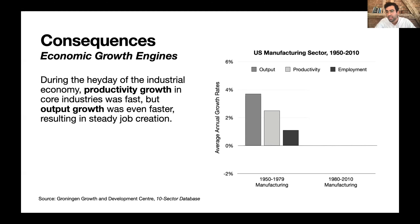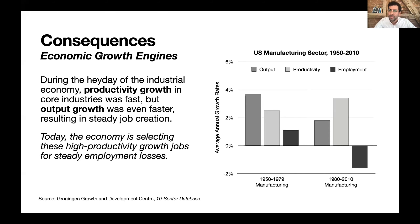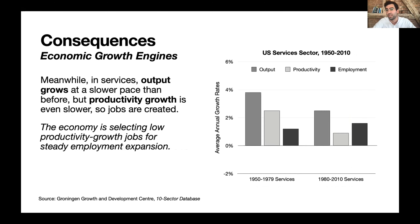We saw fast rates of productivity growth but even faster rates of output growth, and in the gap between those two, steady job creation. That meant workers over time were moving into high productivity jobs — part of the process of structural change. Today, due to much lower rates of output growth, workers are exiting from these high productivity jobs, seeing steady employment losses, which puts the former process of structural change into reverse.